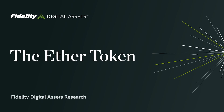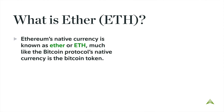In this chapter, we'll discuss the Ether token. Ethereum's native currency is known as Ether or ETH, similar to how the Bitcoin protocol's native currency is the Bitcoin token. Payment along the Ethereum network is always required to be made in the protocol's native token, Ether, regardless of whether you want to make simple peer-to-peer payments or execute more complex smart contract-reliant transactions.